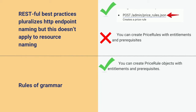As a developer, if you see something in spinal case or snake case or camel case, you think: that is the thing — that's what I have to interact with. So sometimes as a writer you can get tripped up with the rules of grammar when you want to write a sentence in the plural. The convention we came up with was to use the word 'resource' or 'object' in the sentence — so 'you can create price rule objects with entitlements and prerequisites.' But this was one of the things that made coming up with a comprehensive sidebar very difficult for us.